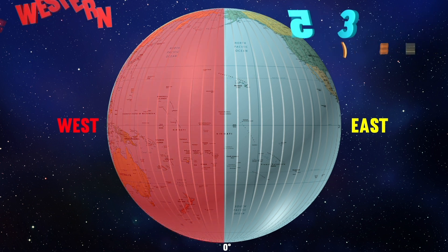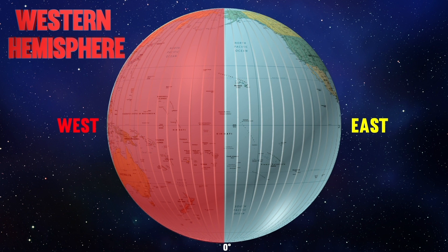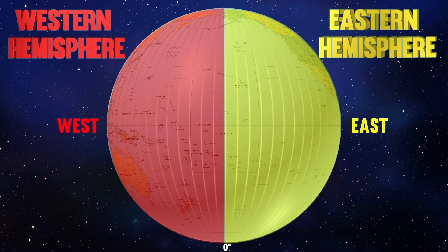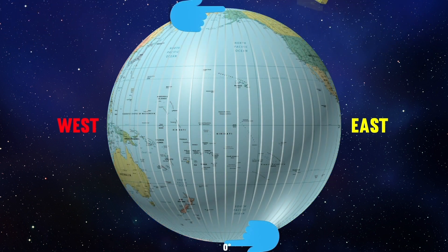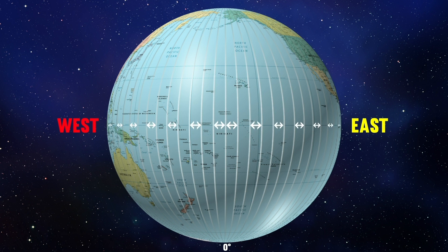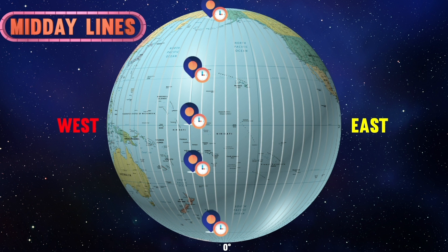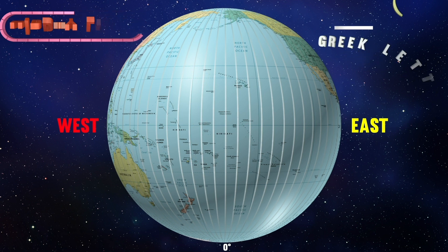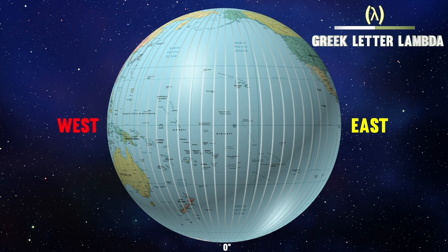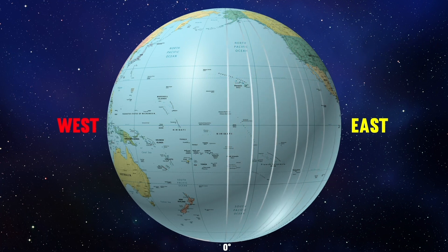At 40 degrees north or south, the distance between a degree of longitude is 53 miles (85 kilometers). The half of earth which lies west of the prime meridian is called the Western Hemisphere, and the half which lies east is called the Eastern Hemisphere. The longitudes are centered at the poles and are much wider at the equator. All places on one longitude will experience midday at the same time, which is why longitudes are also called midday lines. Longitudes are denoted by the Greek letter lambda, and the longitudes are semicircles.